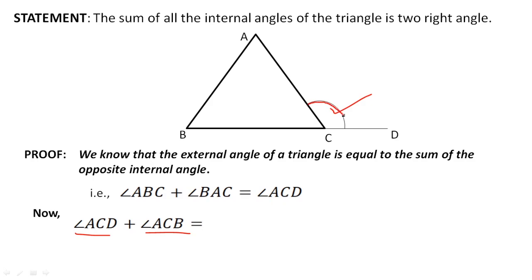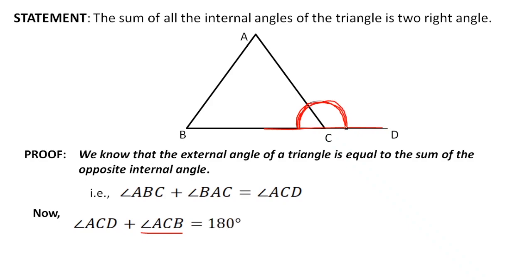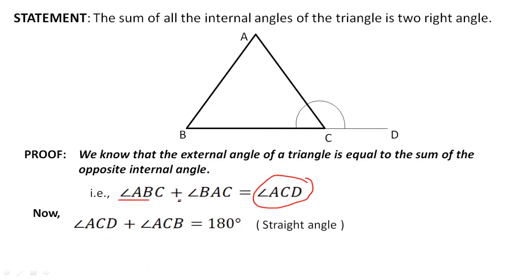Now let's consider angle ACD plus angle ACB. Angle ACD is this angle here, and angle ACB is the angle from here to here. When we add these two angles, they together form a straight angle. The value of a straight angle is 180 degrees, so angle ACD plus angle ACB equals 180 degrees.